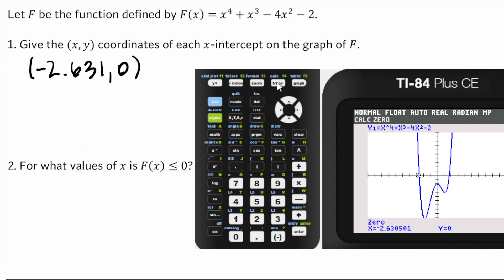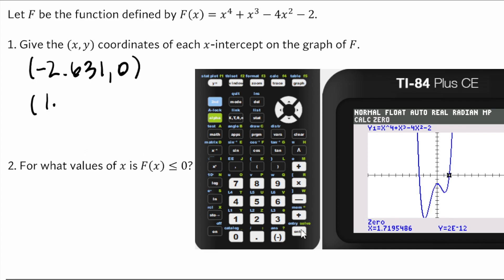The other zero — we calculate between x equals 1 and x equals 2, and we get 1.720 and y is 0. We don't write 2e negative 12 because we know that means 0 — it's just a calculator expression, not really a number.